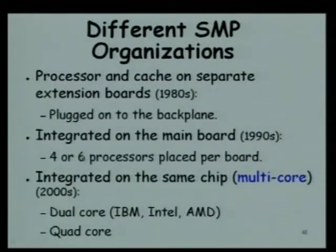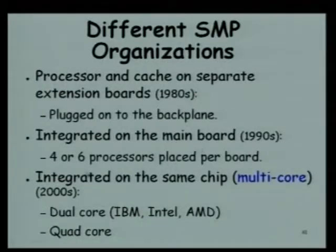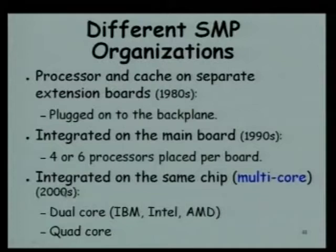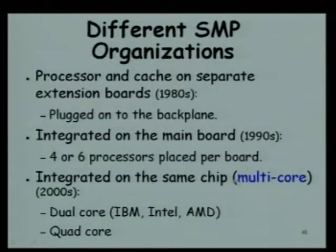In the 1990s, you could buy a board with multiple processors - several processor chips mounted and connected on the same board. The servers available in the 1990s could get 4 to 6 processors per board. And since 2000, we are getting processors integrated in the same packaging, called multi-core processors - like dual-core, quad-core and things like that, which we will discuss a little bit later.